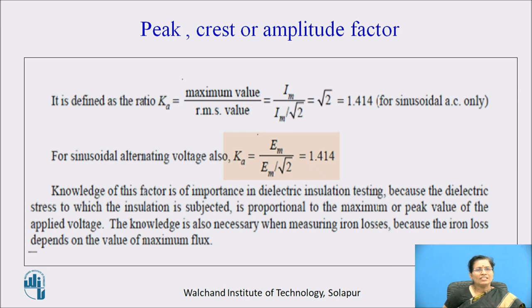So here the next term is the peak or amplitude factor or the crest factor. This is also the ratio between maximum value and RMS value. So Im divided by Im by root 2, so that is equal to root 2. And that will give you the value 1.414. It is also the constant value.